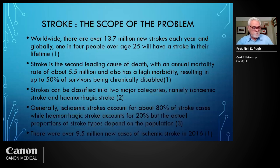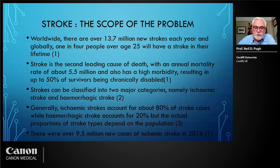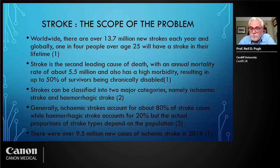Concentrating on stroke: worldwide, there are over 13 million — almost 14 million — new strokes each year. Globally, one in four people over the age of 25 will have a stroke in their lifetime. It is in fact the second leading cause of death, and the annual mortality rate is about 5.5 million. As well as the mortality, we also have a high morbidity, resulting in up to 50% of survivors being chronically disabled. We classify strokes into two major categories: ischemic strokes and hemorrhagic strokes. Ischemic strokes account for about 80% of cases, while hemorrhagic strokes account for about 20%.